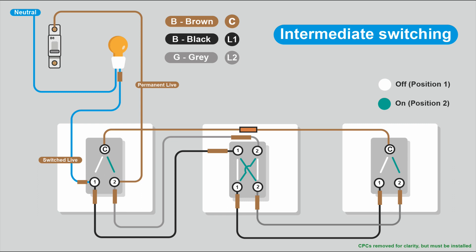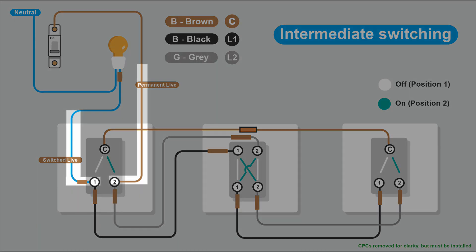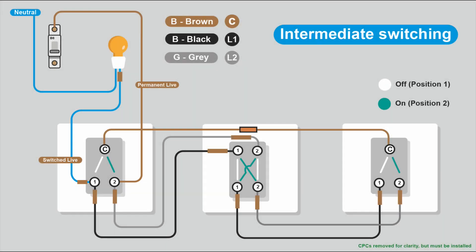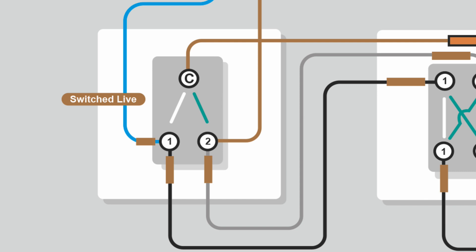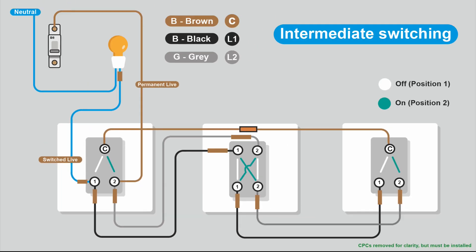It's important to remember to sleeve your conductors. The cable coming into the switch will be twin and earth with brown and blue conductors. This blue conductor is a switch live cable, not a neutral conductor, and it must be sleeved brown so people know it's a live conductor. People sometimes get confused because there are no neutrals at the switch when you bring power to the switch - in that scenario the neutral comes from the ceiling rose to the lamp. You have your permanent live into the switch and switch live out. It's important to sleeve these conductors and also sleeve your strappers with brown sleeving.